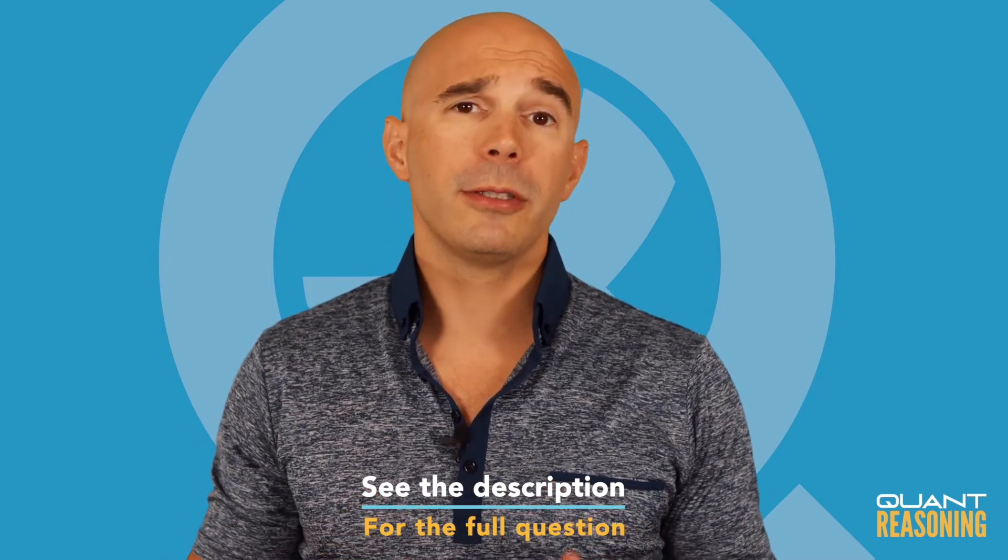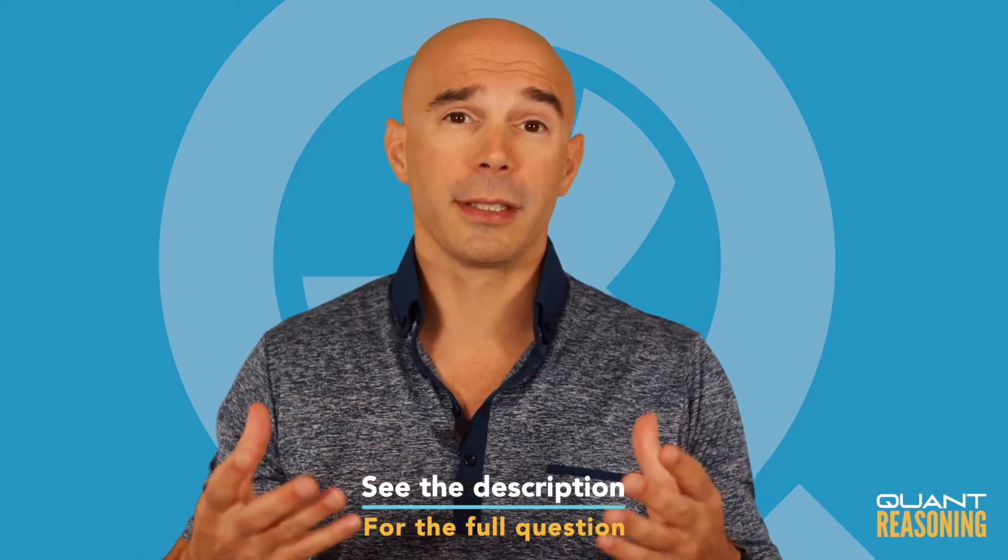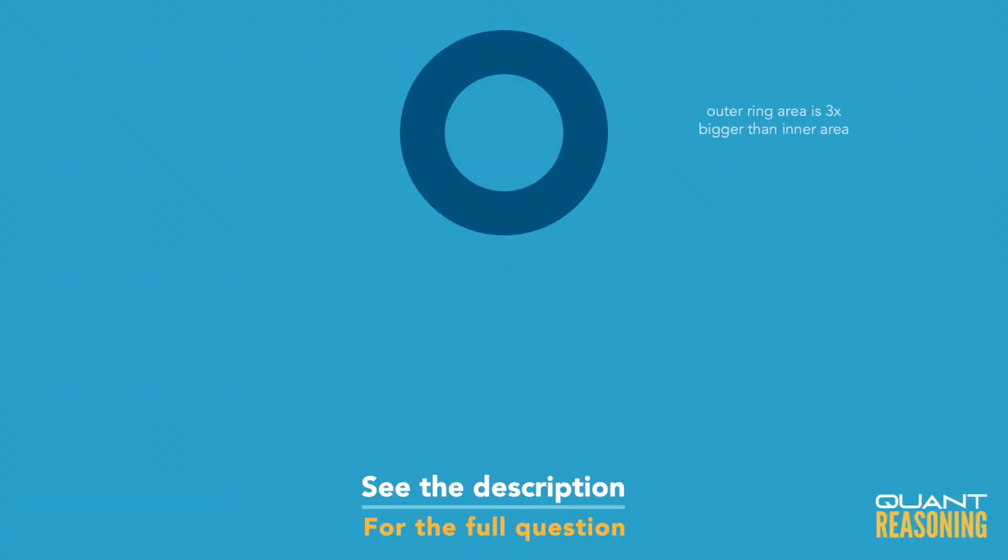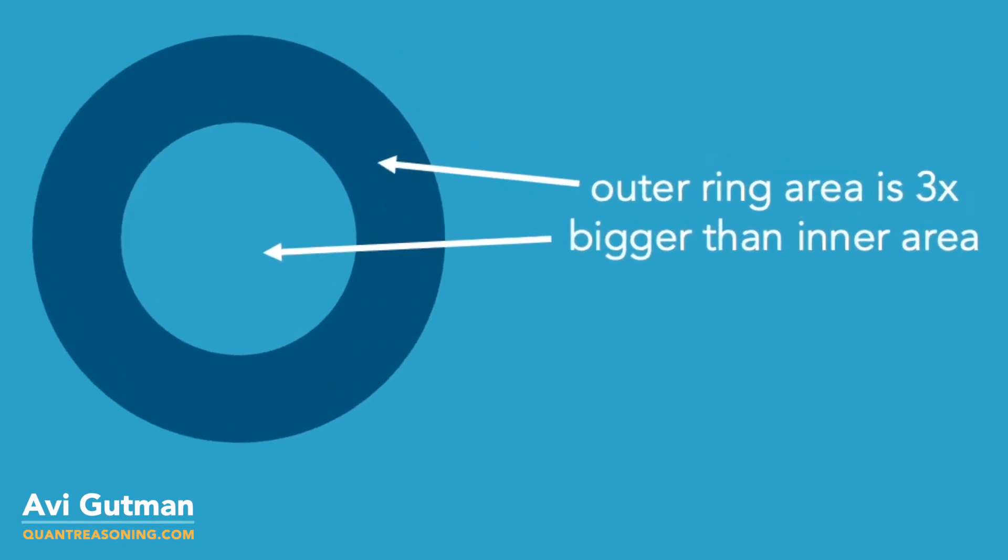So we have a situation here where we're comparing two similar shapes. You've got the inner circle and you've got the big circle. And we're told that the area outside of the inner circle, in other words that shaded area, is three times as much as the smaller circle's area.